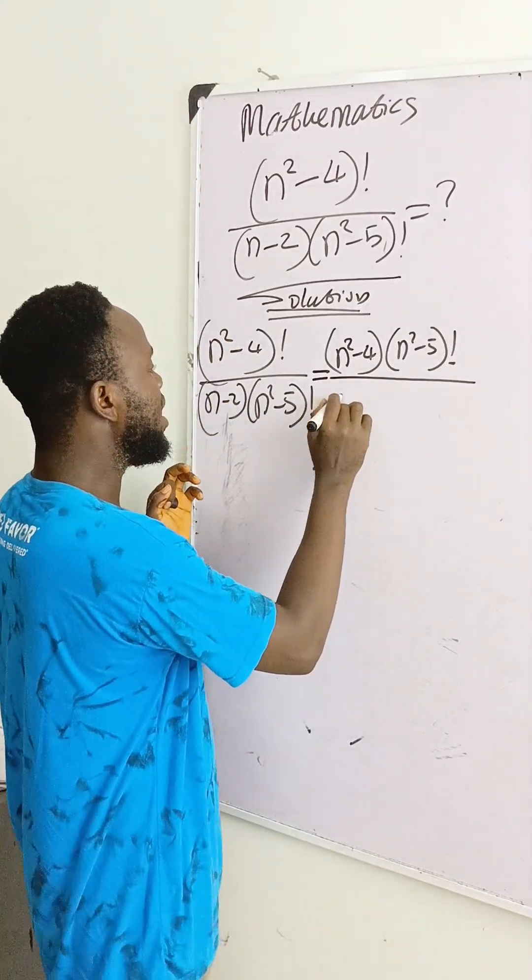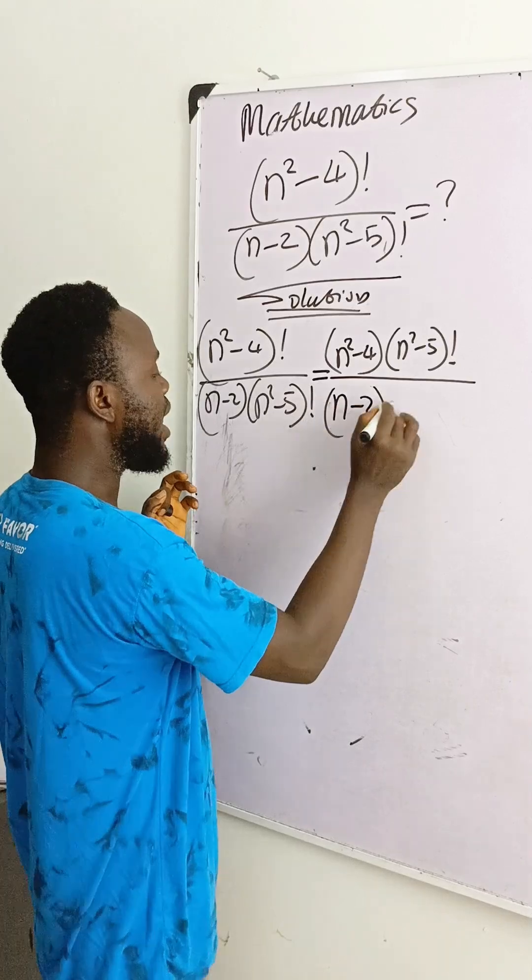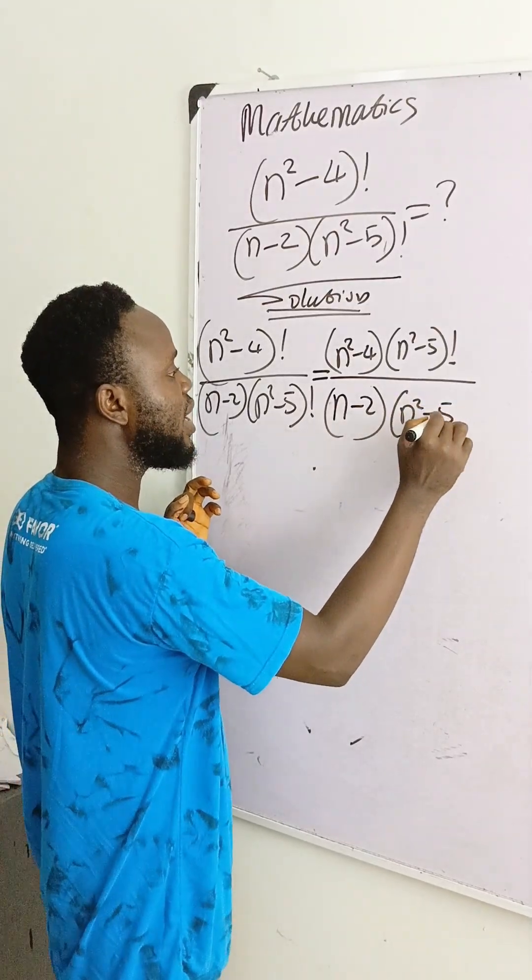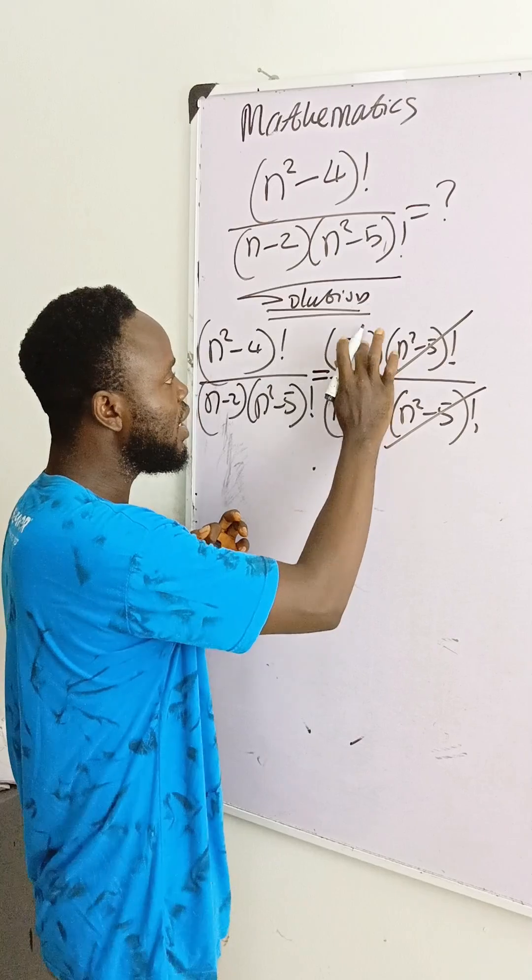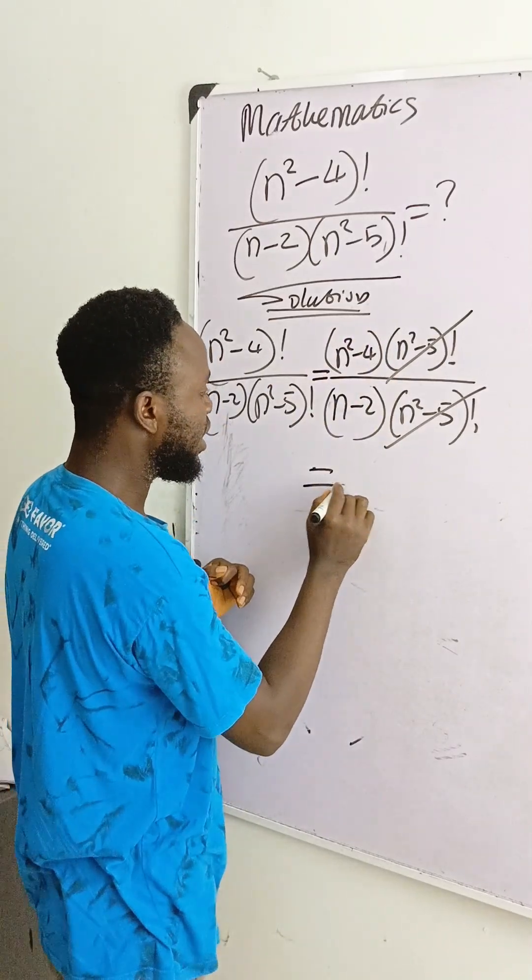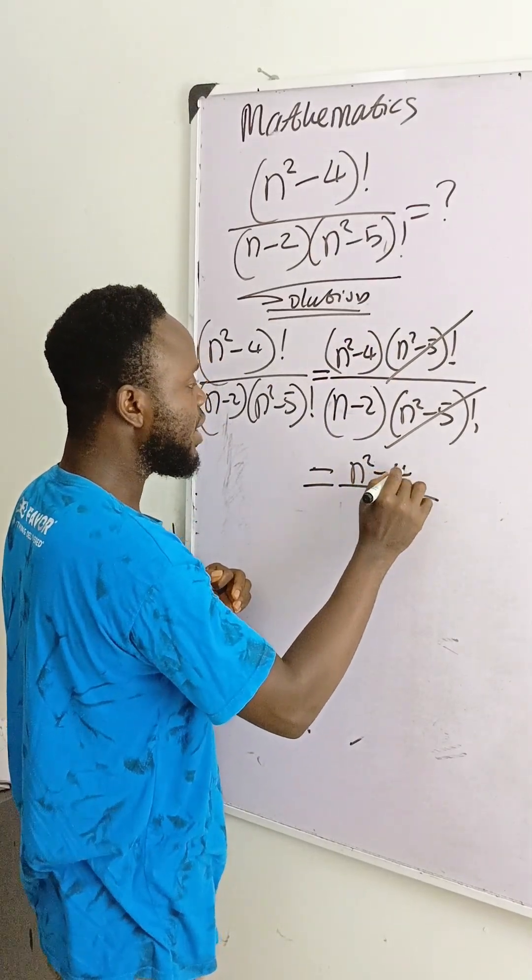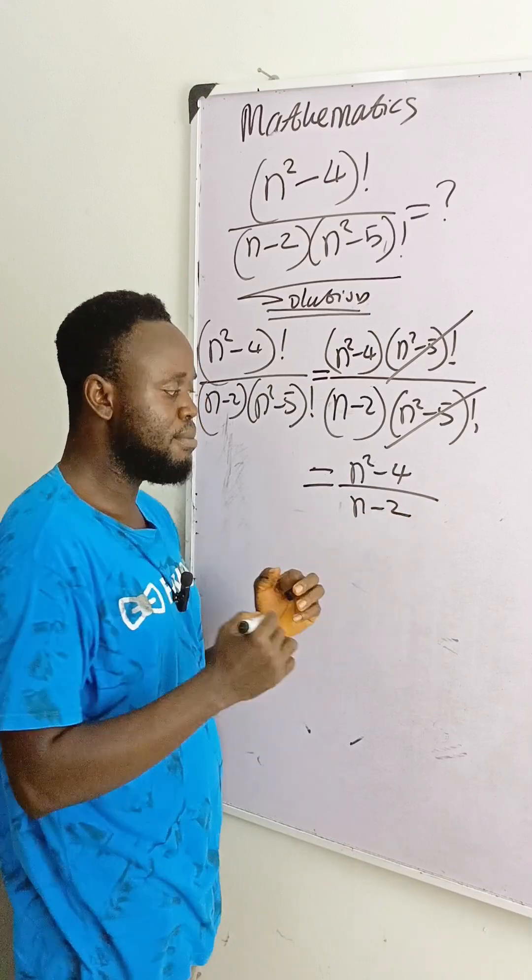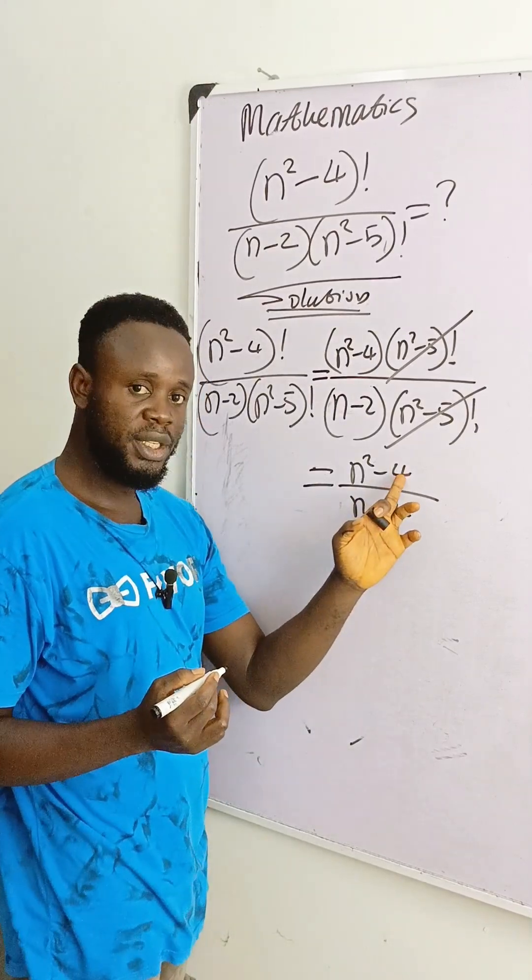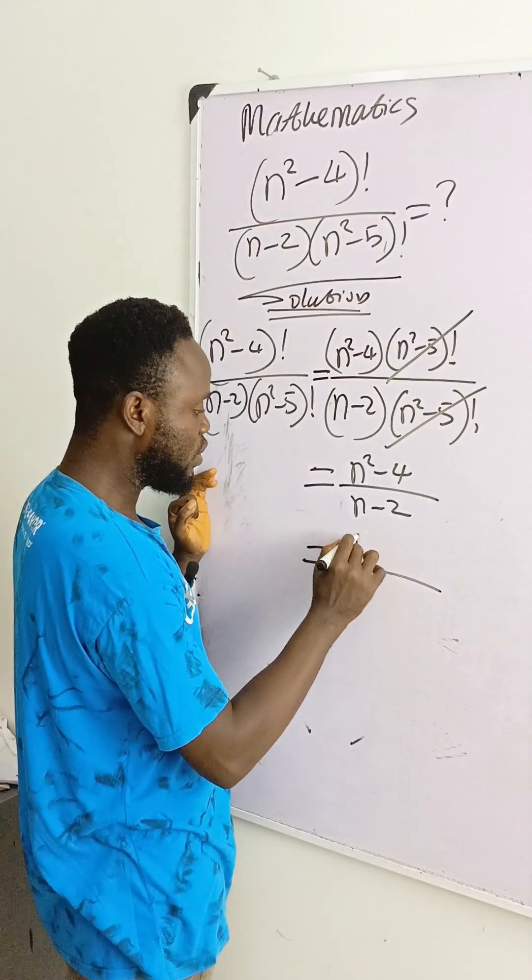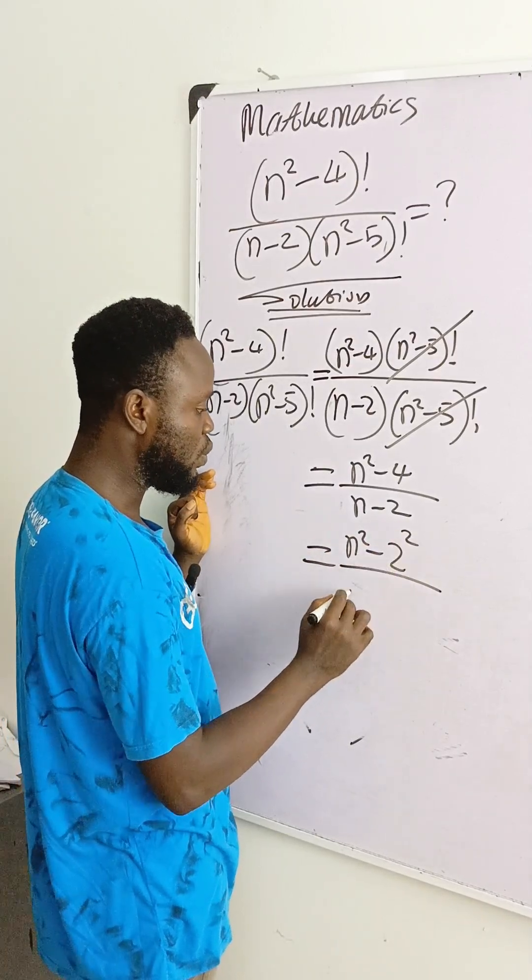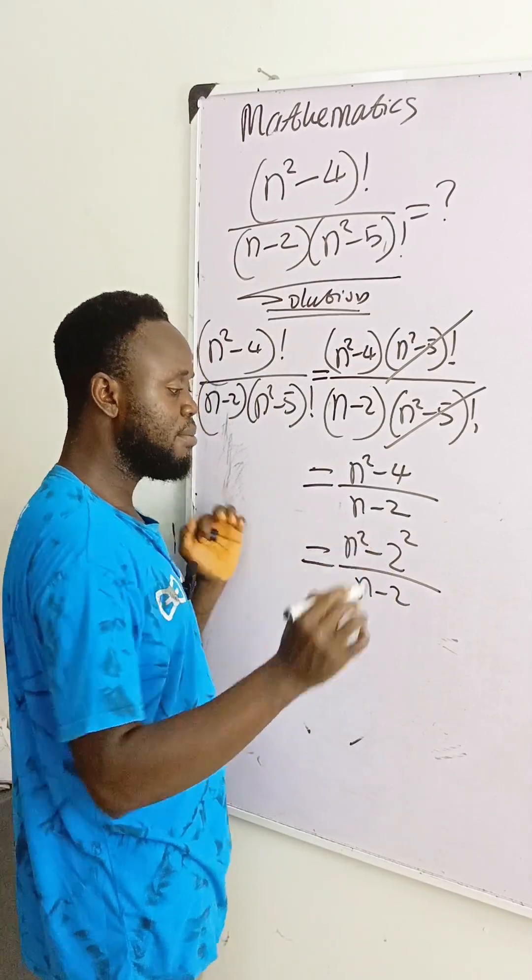Look at what I will do. Then we have n squared minus 5 factorial here. This one will divide this one. We are left only with n squared minus 4 over n minus 2. What do we see here? I am seeing difference of two squares here. That is n squared minus 2 squared over n minus 2.